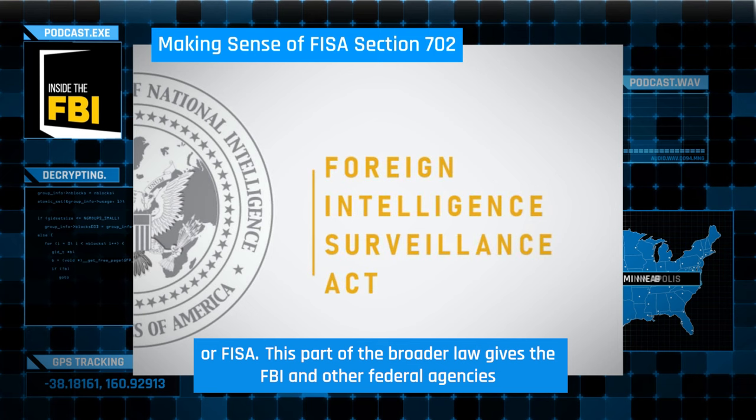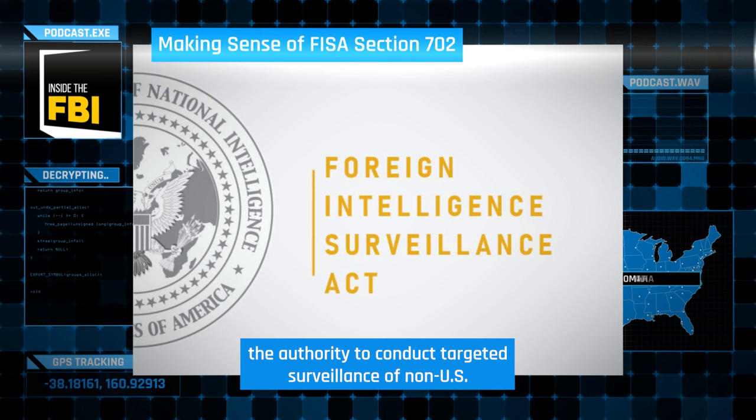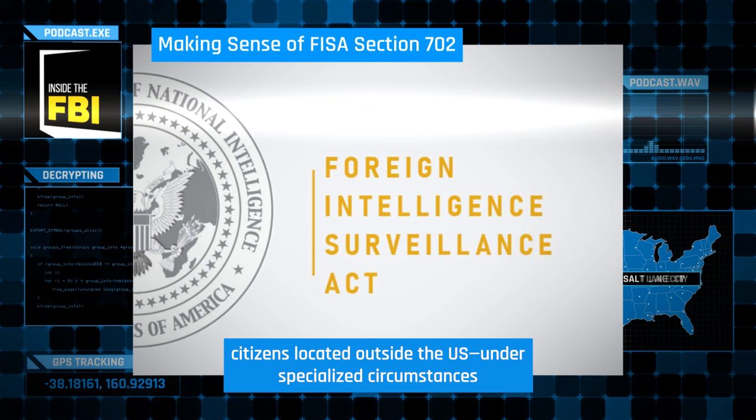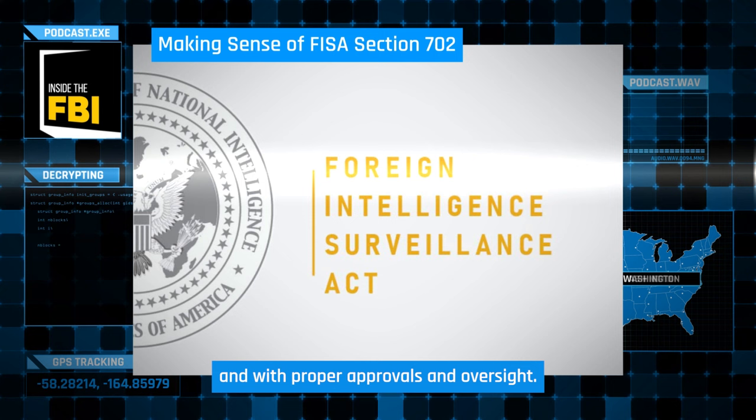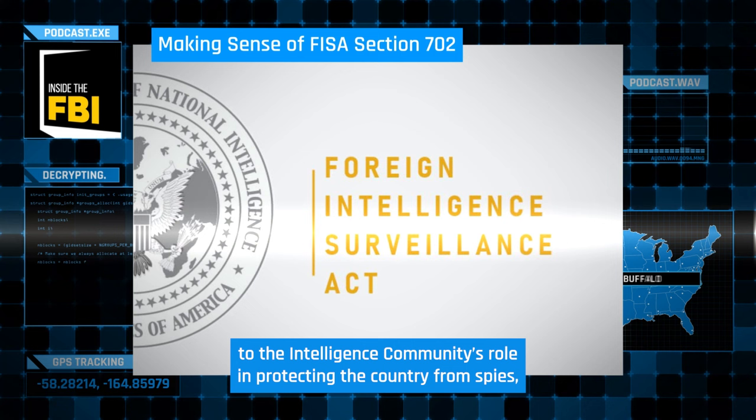This part of the broader law gives the FBI and other federal agencies the authority to conduct targeted surveillance of non-U.S. citizens located outside the U.S., under specialized circumstances, and with proper approvals and oversight. Section 702 is indispensable to the intelligence community's role in protecting the country from spies, malicious cyber attacks, terrorists, and other foreign threats.